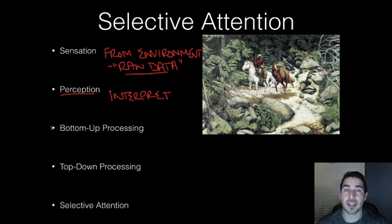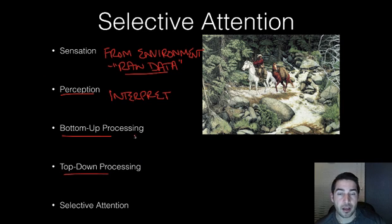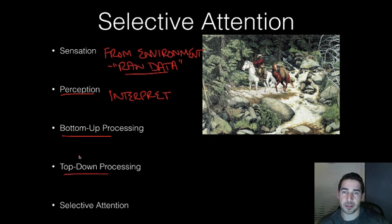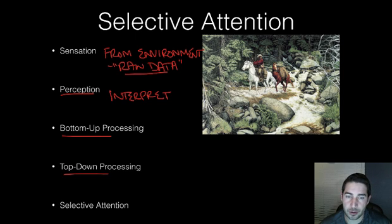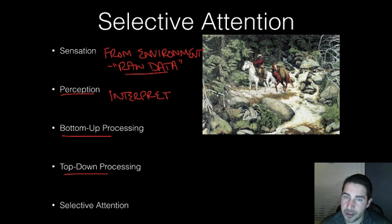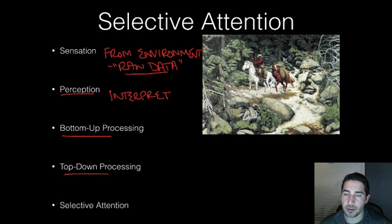We interpret things in two generalized ways: bottom-up processing or top-down processing. Bottom-up processing is when we take the little pieces of data, put them together, and come up with something. For instance, in this picture, we take the lines — here's some tree roots, here's some rocks, oh I see a horse, I see some trees — and you put it all together: this is a cowboy in the woods going through, looking for something. You take the pieces of the scene and build up an idea.